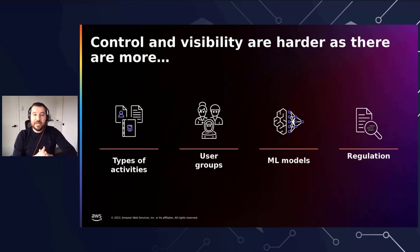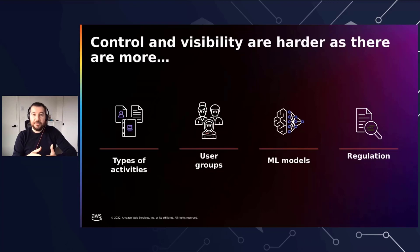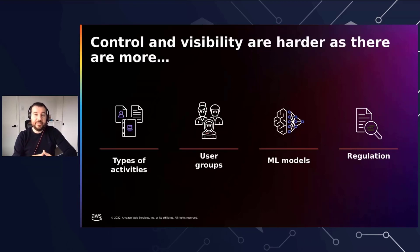ML is not only a data scientist activity anymore. It requires engagement and collaboration from different types of users. With this change in user groups, we observed that ML systems have to support a broader set of ML activities — not only data preparation or model training. For example, while a data scientist prepares data and trains a model, a risk officer can evaluate and review models. An ML engineer is responsible for deploying the model to production, whereas a business owner needs to generate evidence for audit examinations.